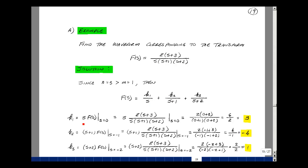To find k1, we multiply f(s) times s, then let s equal 0. The terms cancel, and we have 2(0+3)/[(0+1)(0+2)]. That's 6 over 2, or 3.